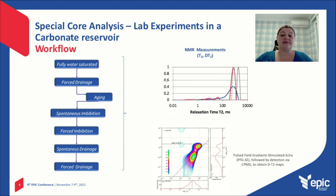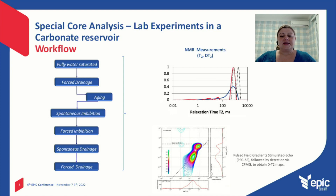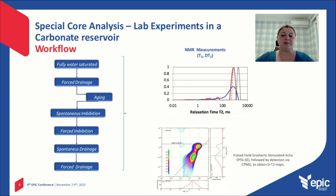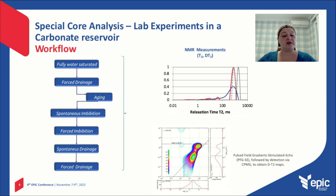For that, it was planned a workflow that starts with the samples 100% saturated with formation water. The next step is the forced drainage, followed by the aging process. The aging process will allow us to obtain the samples at the same wettability condition as we have in the reservoir. The next steps are spontaneous imbibition followed by forced imbibition, spontaneous drainage, and forced drainage.